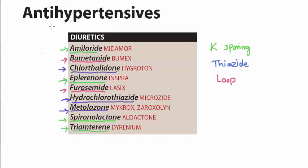So now we discuss antihypertensives, the drugs that are used to treat hypertension. In this there are various classes of drugs that are used. Notably are the diuretics. In the diuretics we have three categories as we discussed earlier: potassium sparing diuretics, thiazide diuretics, and loop diuretics.